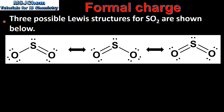Next we look at an example. Three possible Lewis structures for sulfur dioxide, SO₂, are shown below. In two of the possible Lewis structures we have one single bond and one double bond. In the third Lewis structure we have two double bonds.